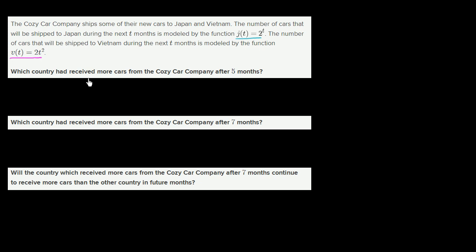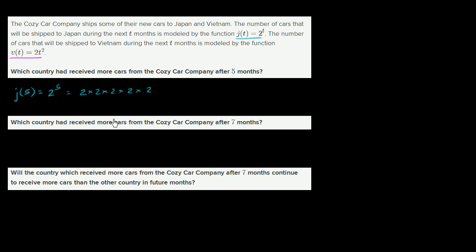Which country had received more cars after five months? Let's see how much Japan is going to receive. t is in months, so j(5) is equal to 2 to the fifth power, which is 2 times 2 times 2 times 2 times 2. That gives us 4, 8, 16, 32.